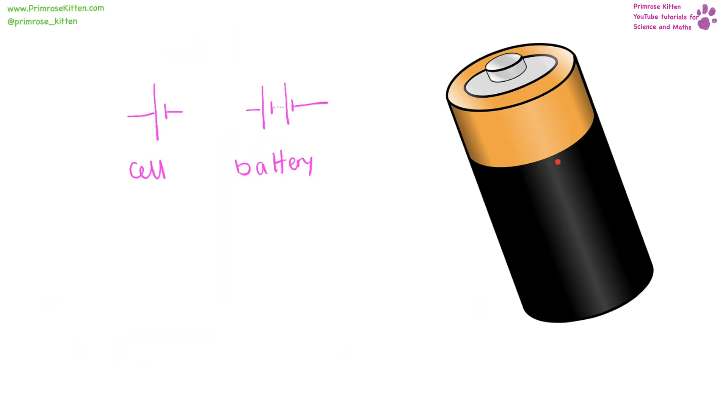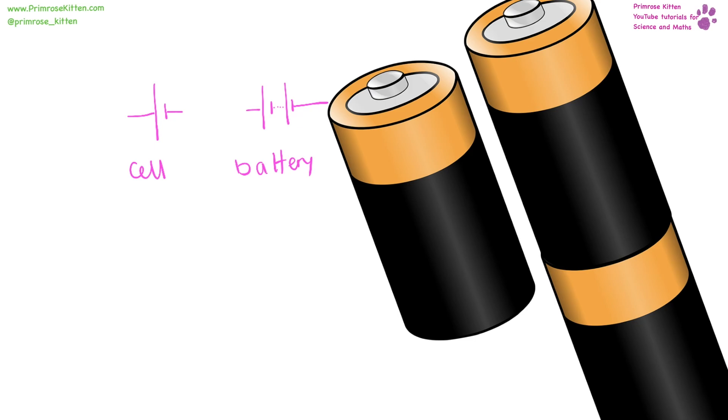So the zinc is going to be giving up electrons, and the copper is going to be accepting electrons. That thing that we commonly refer to as a battery is actually a cell. I know, I know, it's really annoying. A cell is one battery, a battery is more than one cell. So this is a cell, and then two or more of them together would be a battery.